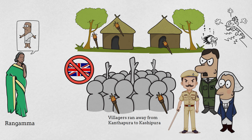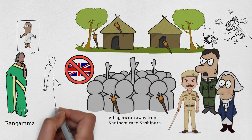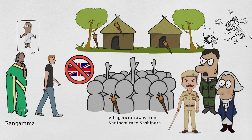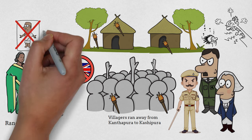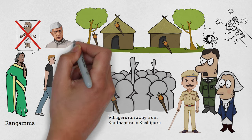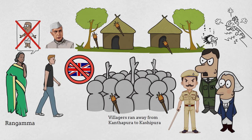Many villagers leave Kanthapura for another village, Kashipura. Everyone is dispersed and goes on with life. Moorthy, who had been in prison, is now released. On hearing the news of what the Britishers have done to Kanthapura and its people, Moorthy gets deeply disappointed and feels the path of non-violence is useless. He plans to join Jawaharlal Nehru's movement for the equal distribution of wealth.